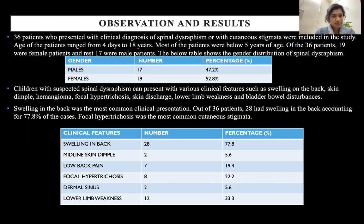Coming to observations and results, we studied 36 patients. Age of the patients ranged from 4 days to 18 years. Most of the patients were below 5 years of age, and there was a female predominance in our study, with 52.8% of the patients being female.